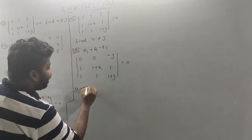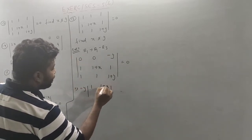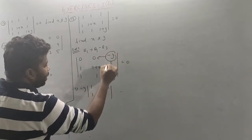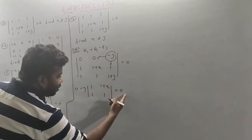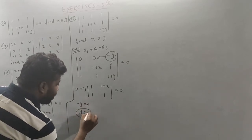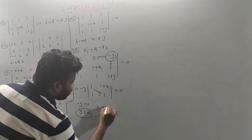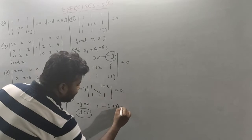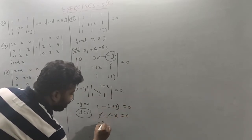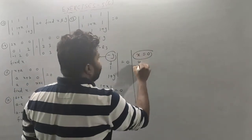Minus y. Adding 1: 1 plus x, 1, 1, 1. Minus y is equal to 0. 1 into 1, 1 into 1. Minus 1 plus x is equal to 0. 1 minus 1 minus x is equal to 0. 1 minus 1 cancel, so minus x is equal to 0. Therefore x equals 0, y equals 0.